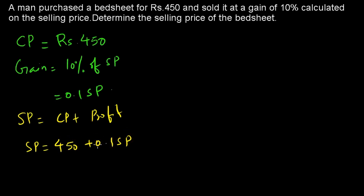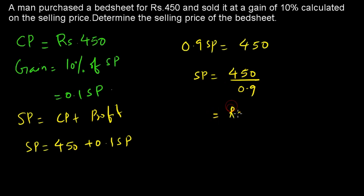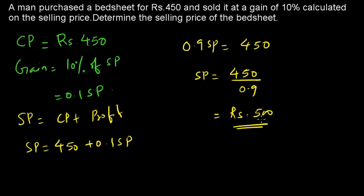So SP minus 0.1 SP equals 450, giving 0.9 SP equals 450. Therefore SP equals 450 divided by 0.9, which equals 500. Thank you for watching.